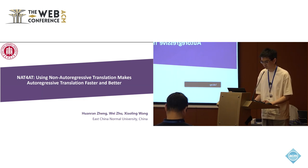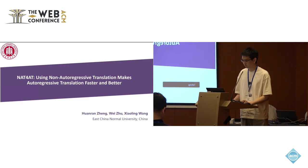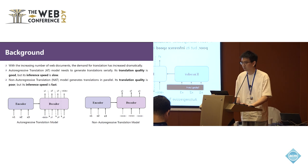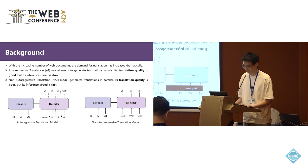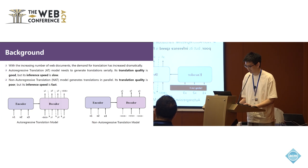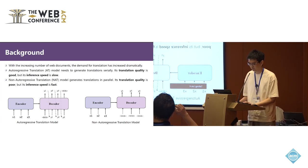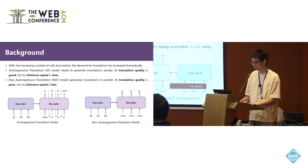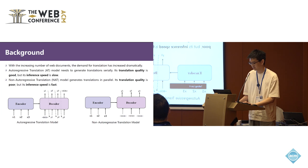NAT4AT: using non-autoregressive translation makes autoregressive translation faster and better. With the increasing number of web documents, the demand for translation has increased dramatically. Autoregressive translation mode needs to generate translation serially. This makes it unable to effectively use the parallel computing capability of existing devices such as GPUs. So its translation quality is good, but its inference speed is low.